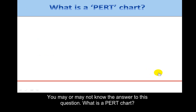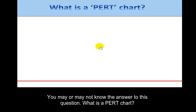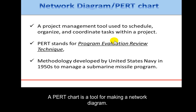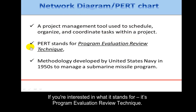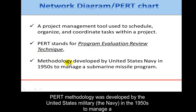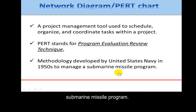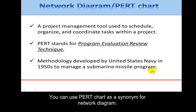You may or may not know the answer to this question, but what is a PERT chart? A PERT chart is a tool for making a network diagram. It's a specific project management tool used to schedule, organize, and coordinate tasks within a project. PERT stands for Program Evaluation Review Technique. The methodology was developed by the United States Navy in the 1950s to manage a submarine missile program. You can use PERT chart as a synonym for network diagram.